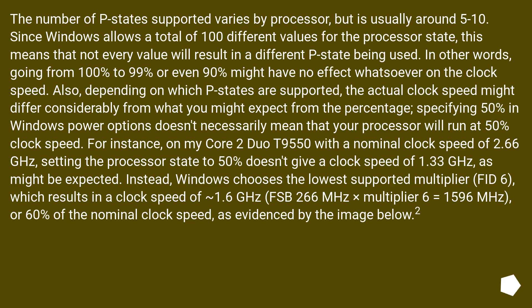Instead, Windows chooses the lowest supported multiplier — FID 6 — which results in a clock speed of 1.6 GHz: FSB 266 MHz times multiplier 6 equals 1596 MHz, or 60% of the nominal clock speed, as evidenced by the image below.